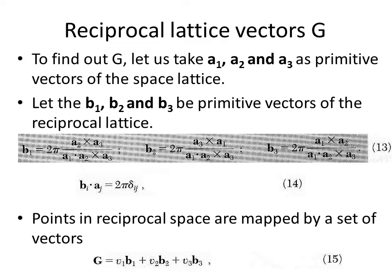In most textbooks — this notation is taken from Kittel — the primitive vectors for the space lattice are given by a, b, c and the corresponding reciprocal lattice vectors are given by a*, b*, c*. Here we use a1, a2, a3 for the space lattice and b1, b2, b3 for the reciprocal lattice. These sets of primitive translation vectors satisfy the condition b_i dot a_j equals 2π δ_ij.